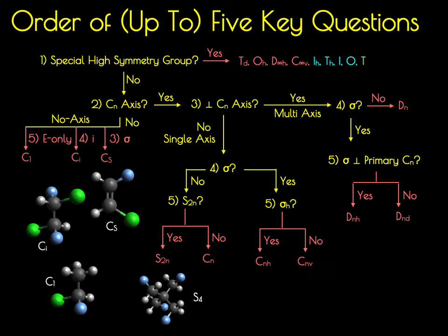So these represent the five questions — up to five questions — that get you to any particular point group. Now we're going to go back and look at these special high-symmetry groups: the linear groups and cubic groups.